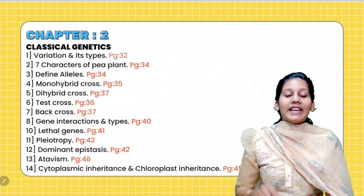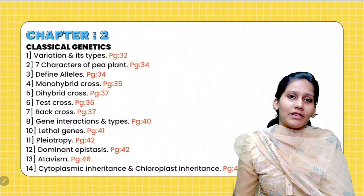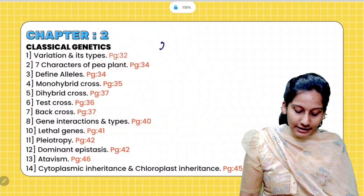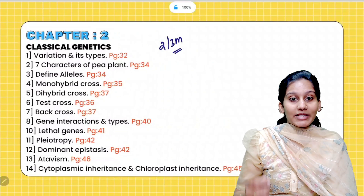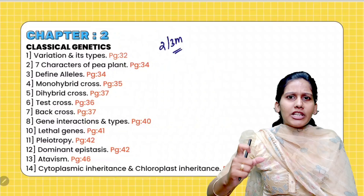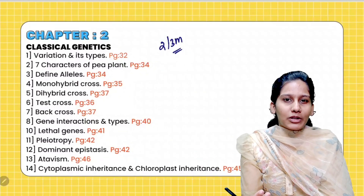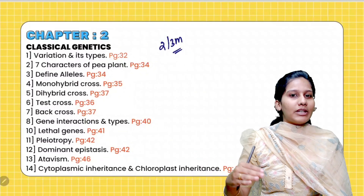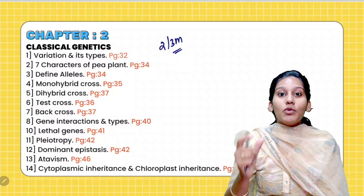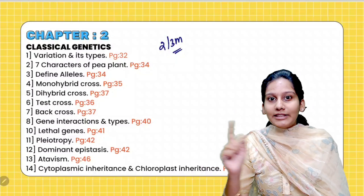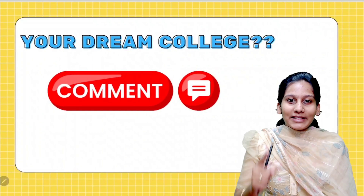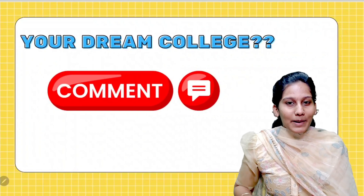Next, Chapter 2 Classical Genetics — we will talk about two marks and three marks. So if you read all these questions and you have a screenshot, or if you have any questions, you can also mention it in the comments.